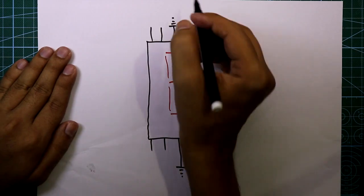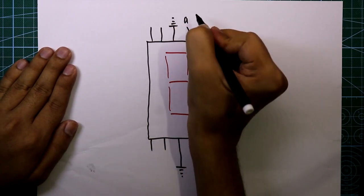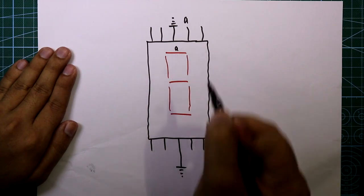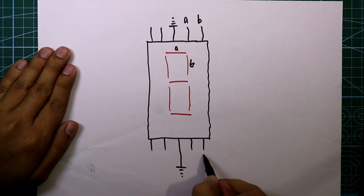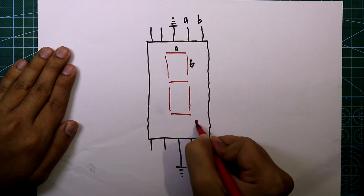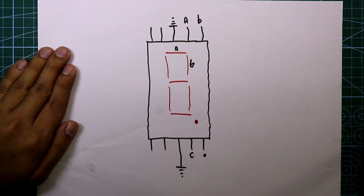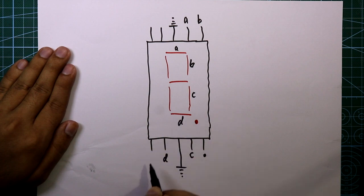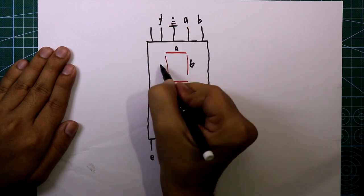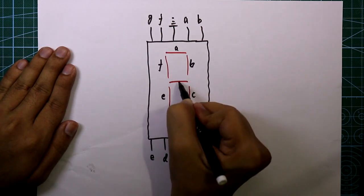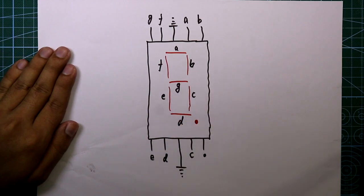Both middle pins are connected to ground. Pin A corresponds to this segment, pin B means this segment, the dot pin is the decimal point visible on the display, pin C means this segment, pin D is this one, pin E means this segment, pin F is the F segment, and pin G is the middle segment. So this is the pin diagram of the common cathode display.